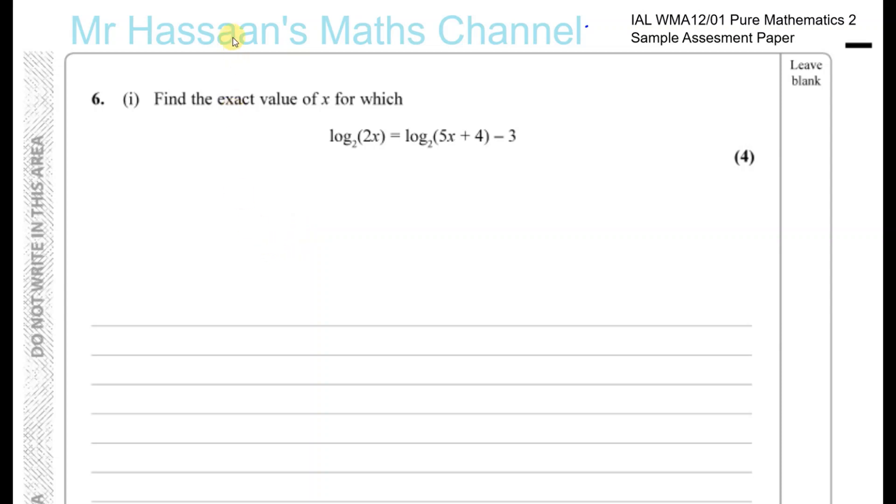Okay, so here we have a question about logarithms and what we have to do when you've got a situation like this is try to combine the log terms together as one. So what I'm going to do is bring the log terms together on one side of the equation. So I'll say log to the base 2 of 2x minus log to the base 2 of 5x plus 4 is equal to minus 3.